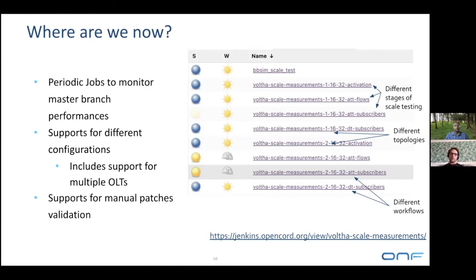Every one of these jobs can also be triggered on a custom set of images, if we want to make sure a patch will not ruin performance before merging. Currently we are working on integrating this feature with Gerrit — our code management tool. Basically, you'll be able to comment on a pull request saying 'scale test' and that will automatically build the required image and run the scale test, then report the result back to Gerrit as a pre-check verification.